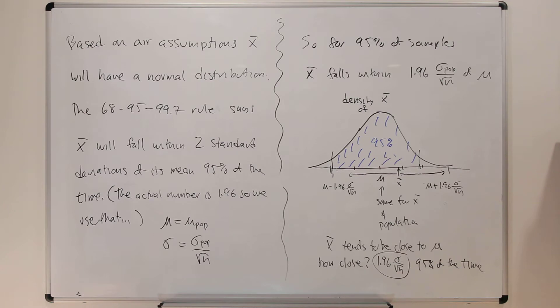The 68-95-99.7 rule says x-bar will fall within two standard deviations of its mean 95% of the time. The actual number is 1.96 standard deviations.